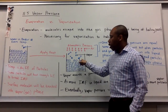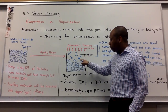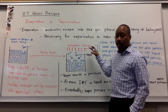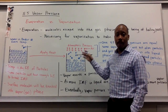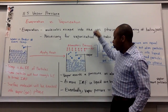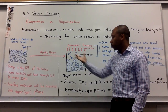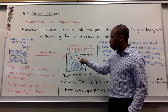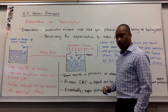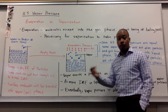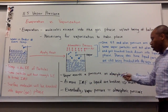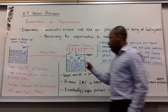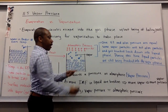Once these vapor particles have escaped, they encounter something above the liquid. Above every standing body of water — or anything, really — we have atmospheric pressure: air molecules exerting pressure downward on the vapor. The vapor is released and encounters the atmospheric pressure. That encounter is pressure-filled as well, so the vapor exerts a pressure back up on the atmosphere. We call that vapor pressure.